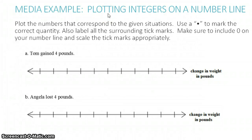In this example, we're going to learn how to plot integers on a number line. Plot the numbers that correspond to the given situation. Use a point in mathematics to mark the correct quantity. Also label all the surrounding tick marks. Make sure to include zero on your number line and scale the tick marks appropriately.